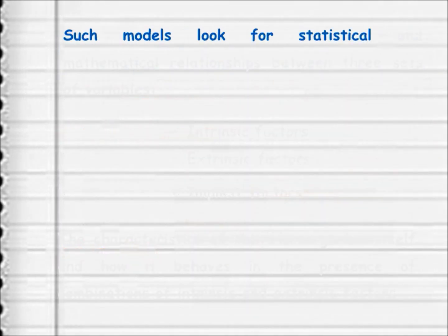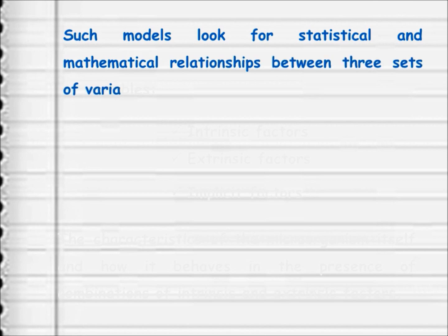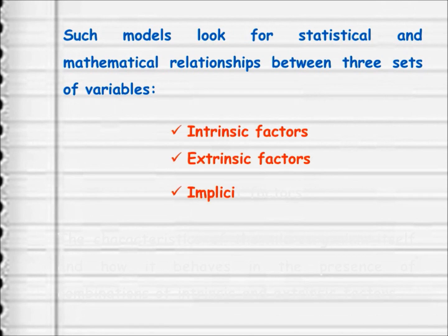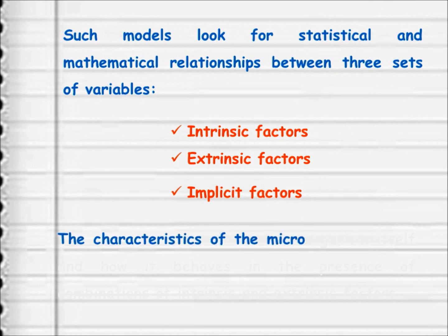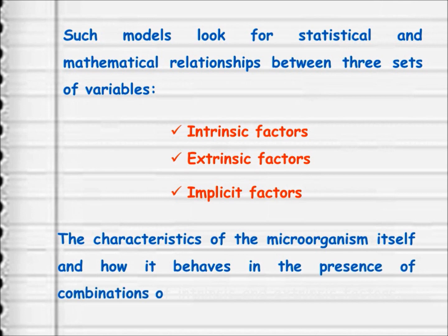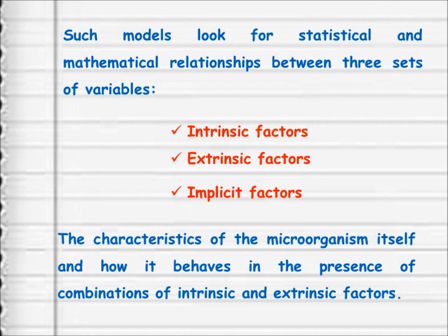Such models look for statistical and mathematical relationships between three sets of variables — including the characteristics of the microorganism itself and how it behaves in the presence of combinations of intrinsic and extrinsic factors. Such models need to be based on good experimental data mapping rates of change within given combinations of factors.